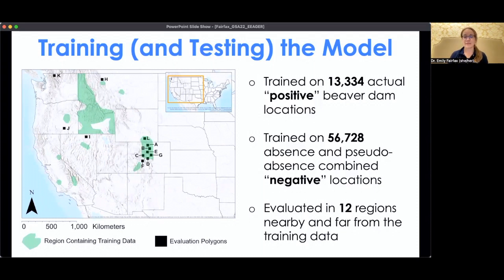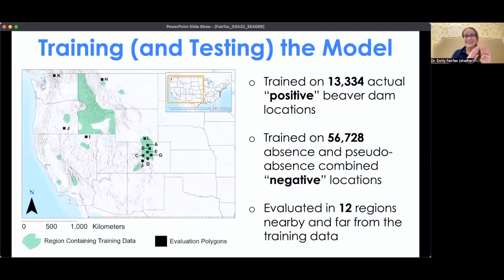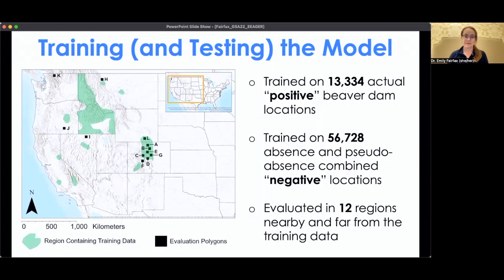We also evaluated the model in 12 different regions. Some were located within our training areas — not overlapping the training data specifically, but in similar landscapes, like an unmapped portion of a watershed we had partly mapped. We also checked it outside of our training regions to see how good the model was at extrapolating pretty far beyond what it had seen before.